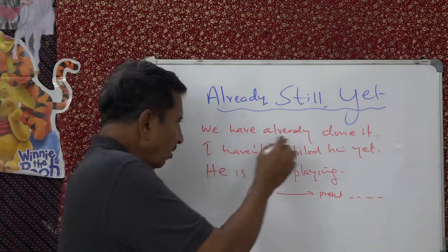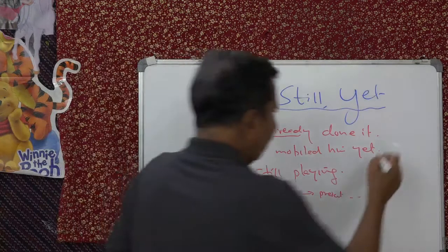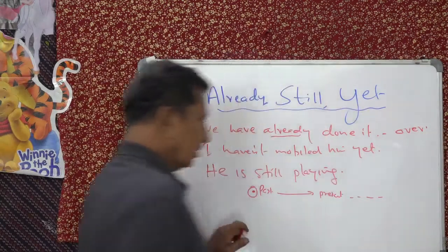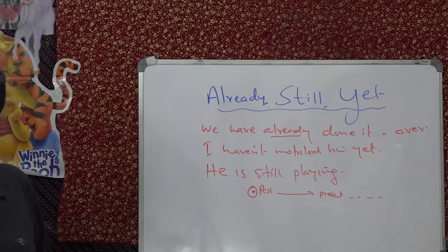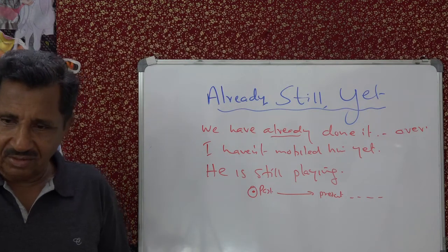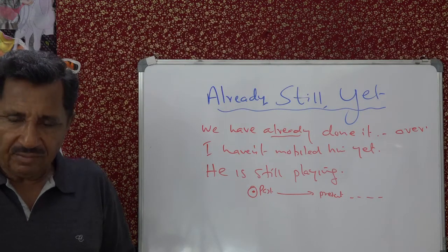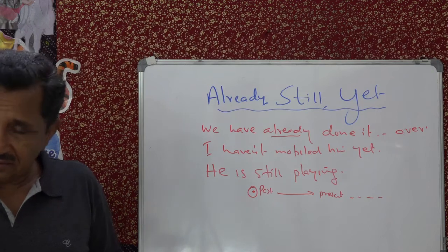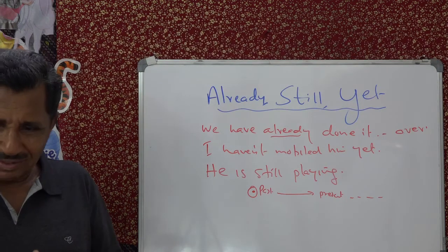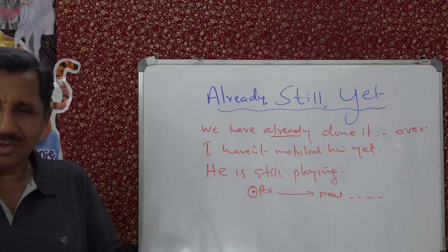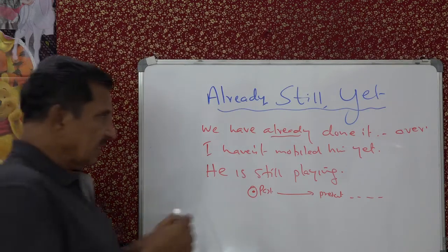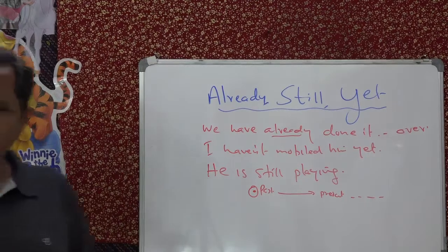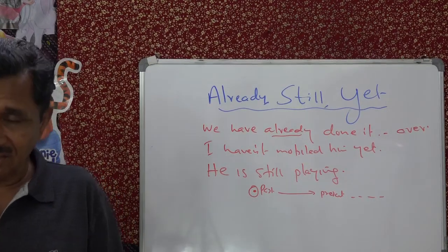'Already' means the action is over. 'Yet' means not yet, not over — takes some more time. Have you done your exercise? No, we haven't yet. That means I expected that you might have done it by now, but you did not do it. 'Yet' is usually used in questions and negative sentences.